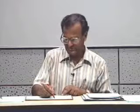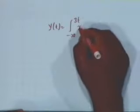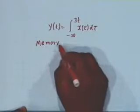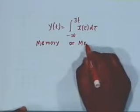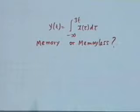The next question: is the system with output given by the integral from minus infinity to 3T of X(tau) d(tau) a memory system or memoryless? It does have memory, because the present output Y(T) depends on all past inputs from minus infinity up to 3 times T. Therefore, it has memory.